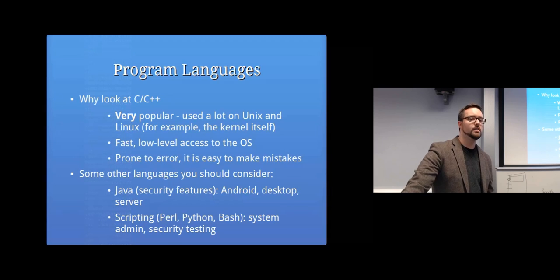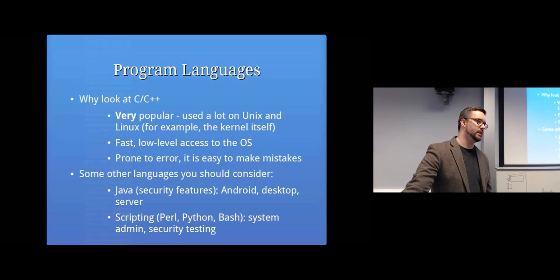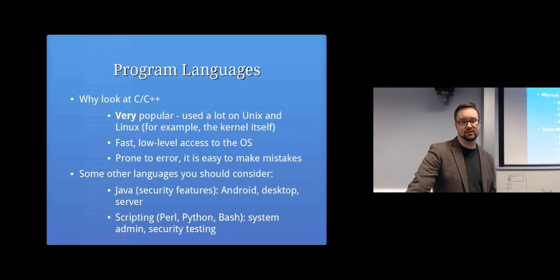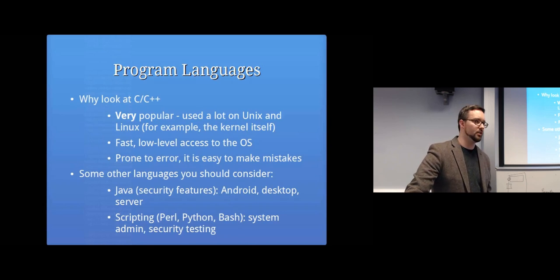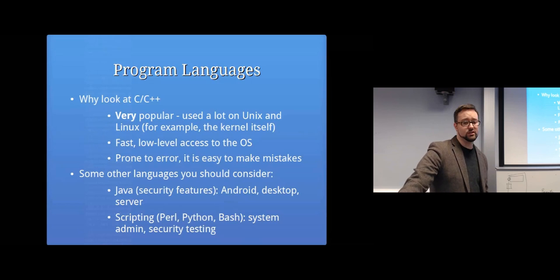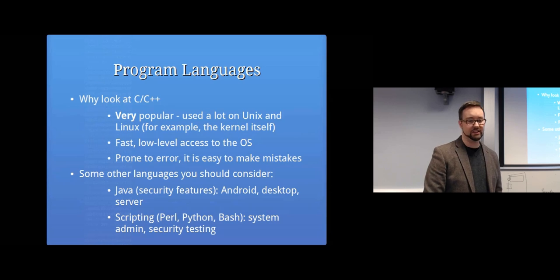The programming languages we're going to look at are C and C++. One of the reasons is because they're very commonly used, and also they're very low-level programming languages compared to some others. That means they're very prone to error - it's easier to make a mistake that causes security problems in C or C++ compared to Java, Ruby, or Python. But all of those languages are worth learning. In terms of understanding vulnerabilities, C is going to make it a lot easier for us to see the kinds of mistakes that get made.